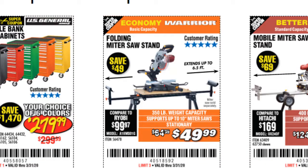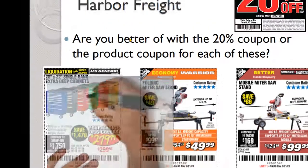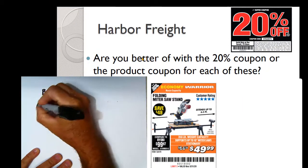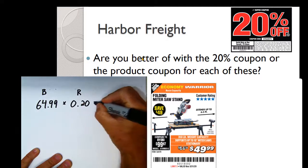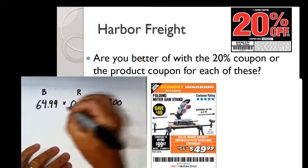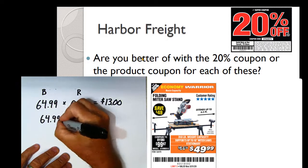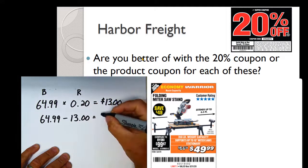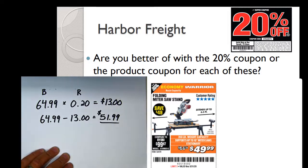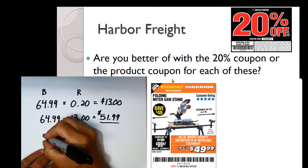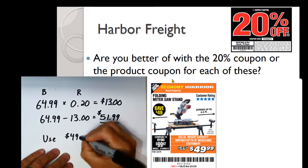The second item is a folding miter saw stand regularly $64.99, with a store coupon for $49.99. Using the 20% off coupon: $64.99 × 0.20 = $13.00, so we'd pay $64.99 − $13.00 = $51.99. The store coupon at $49.99 is actually the better deal this time, so we should use the $49.99 coupon.